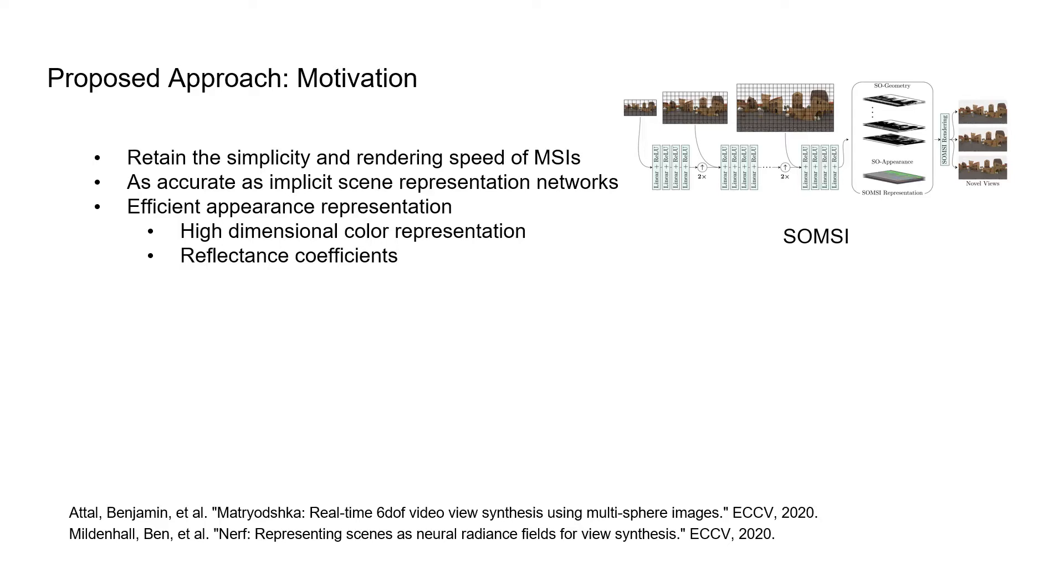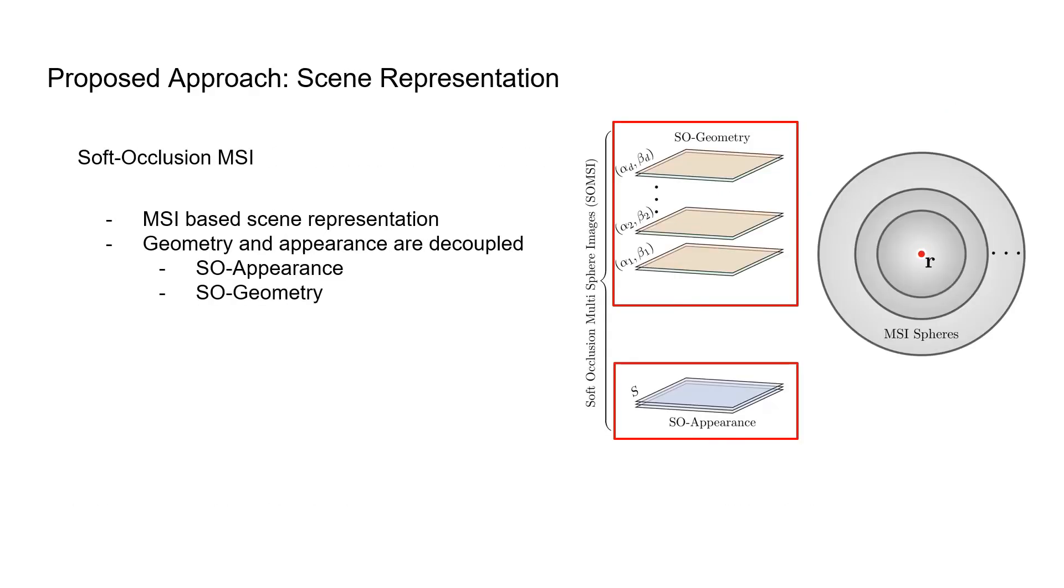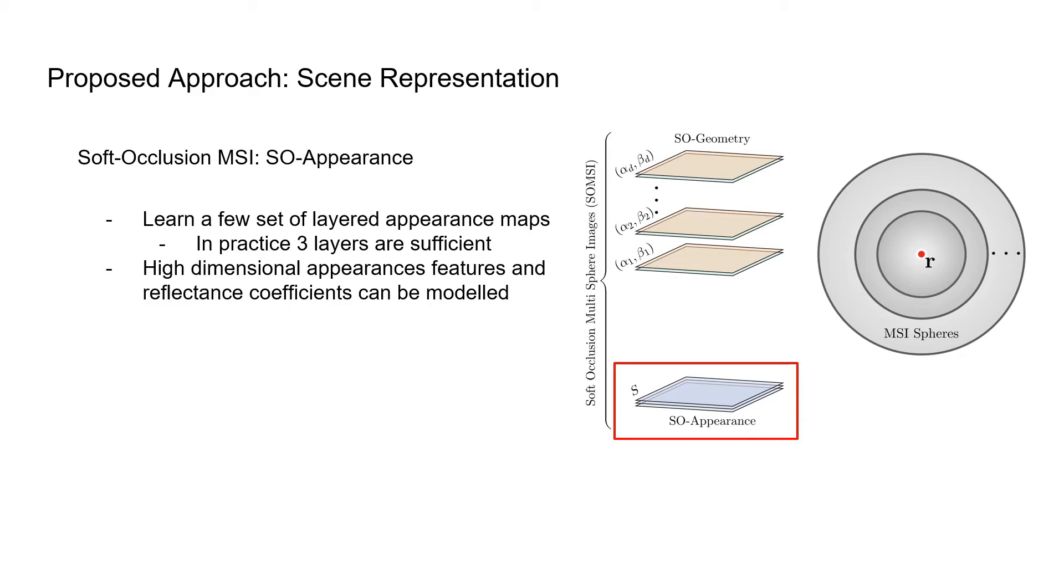We also aim to enable the use of high-dimensional appearance features in a memory-efficient manner. Our proposed soft occlusion multisphere image representation decomposes the scene into soft occlusion appearance and soft occlusion geometry. Soft occlusion appearance is inspired by the fact that ray casts through any pixel will intersect with only a few surfaces. Therefore, instead of learning appearance per sphere, we compress the MSI appearance into a few sets of layered appearance features. This is similar to layered representations that model occlusion levels. In practice, only three layers of appearance features are sufficient.